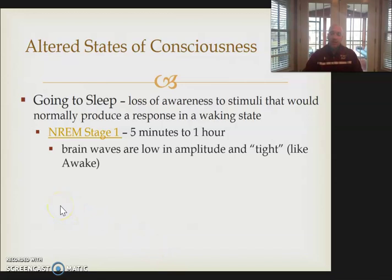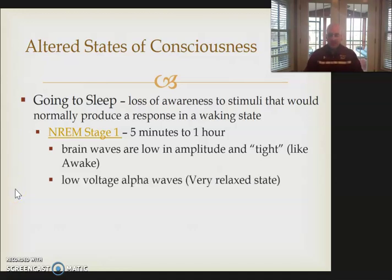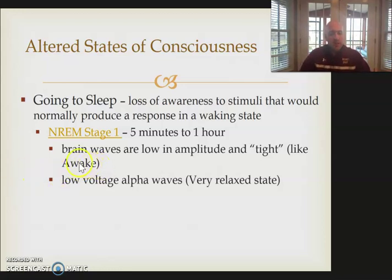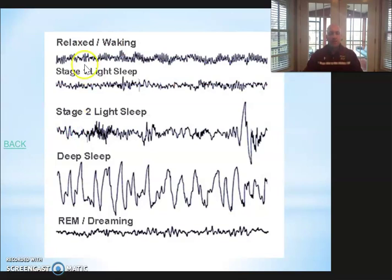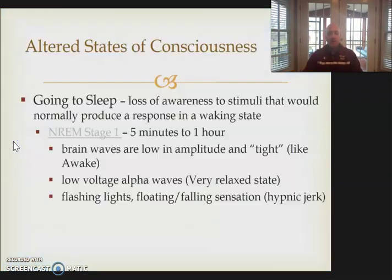Stage 1 is a very light stage. If we were to look at a person's brain on an EEG, it would register as what are called alpha waves. I like to associate alpha with 'awake' — it typically means our brain is still quite awake. This is what our brain looks like right now — a relaxed waking brain. This is our brain when it is in Stage 1: very similar tight, rapid waves, much like being awake.